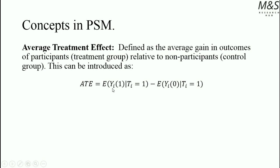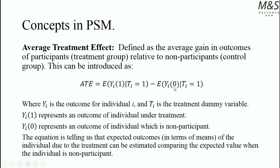The first expected outcome relates to individual A with outcome value 1 in parenthesis, reflecting that the individual was treated when the treatment was given. Minus the expected outcome of individual A with value 0 in parenthesis, reflecting they were non-participant when the treatment was given. We have a problem measuring this second part of the expression, since it is defined as the proper counterfactual and cannot be measured in reality — we can only make an assumption about it. The equation tells us that the expected mean outcome due to treatment can be estimated by comparing the expected value when the individual is non-participant.